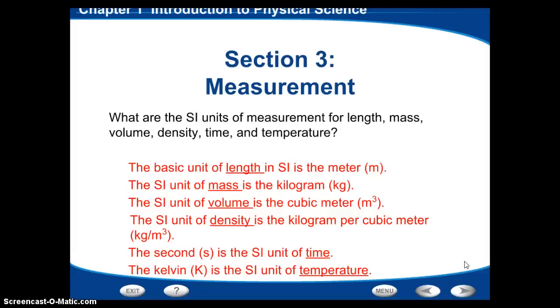For density, it's a kilogram per cubic meter. And for the second, the second is the SI unit for time. Kelvin is the SI unit for temperature.